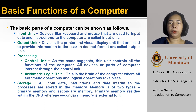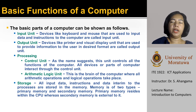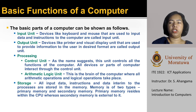For output, we can consider devices like printer and visual display unit. For example, the monitor, which is used to provide information to the user in the desired format. Under processing, we can consider two parts: the control unit and the arithmetic logic unit, or ALU.